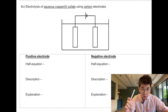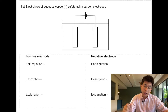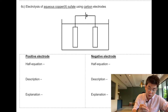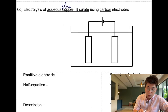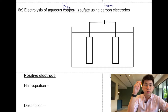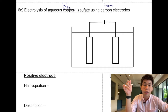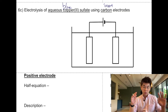Today we'll be doing another electrolysis example, this time with aqueous copper(II) sulfate. Aqueous copper(II) sulfate is blue in color. I'm using inert electrodes here, which means the electrodes conduct electricity but do not react with the solution.